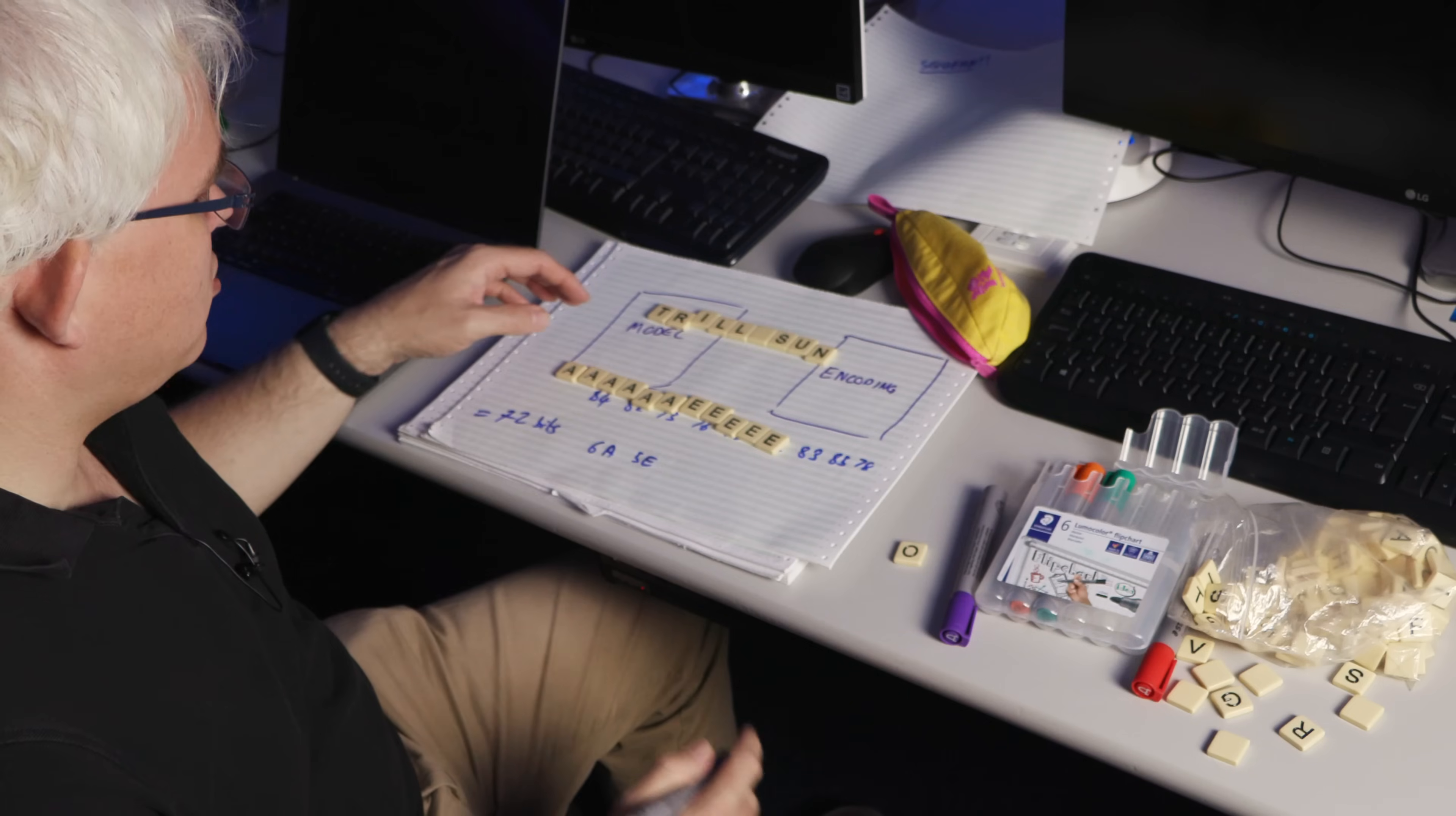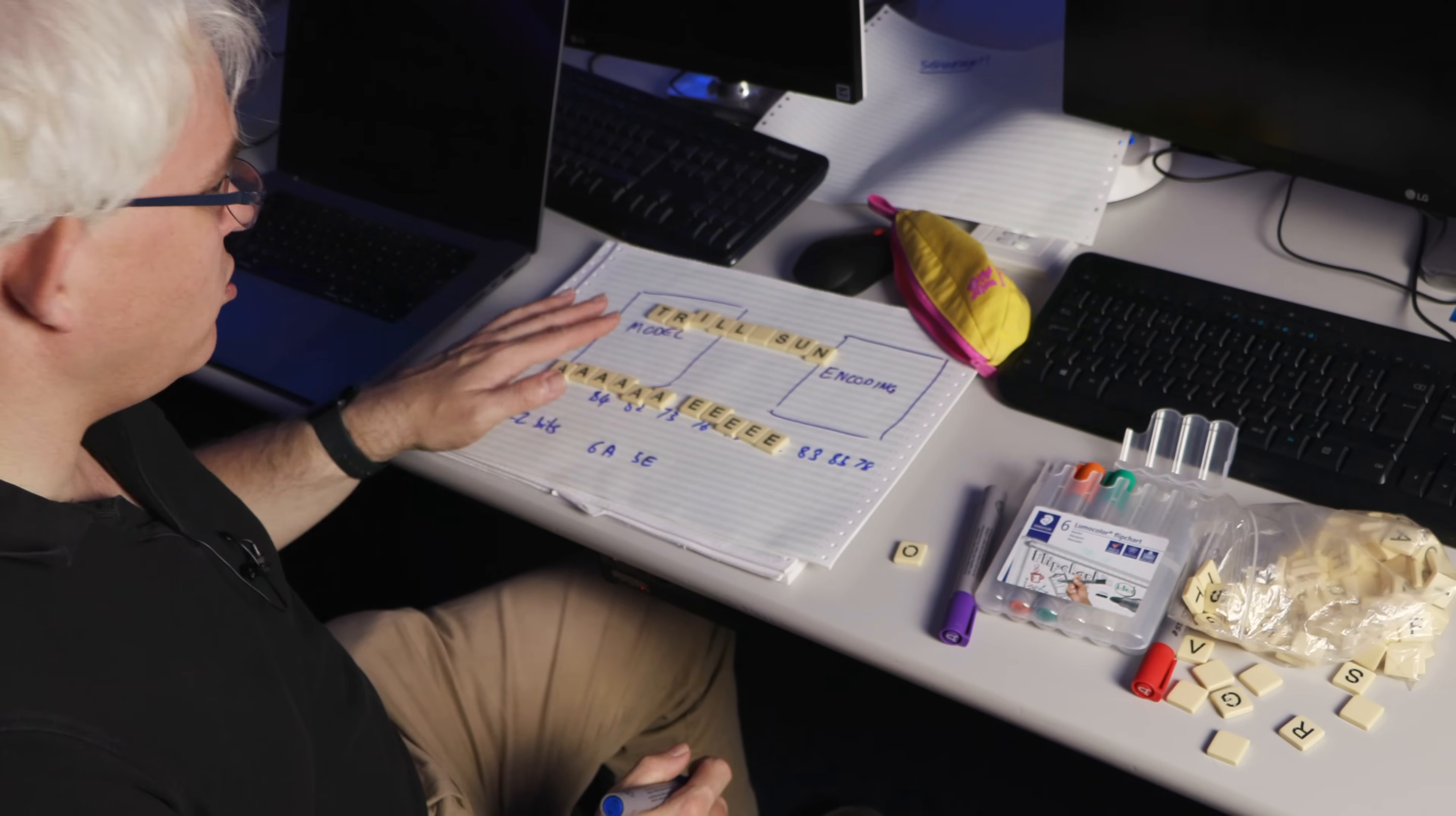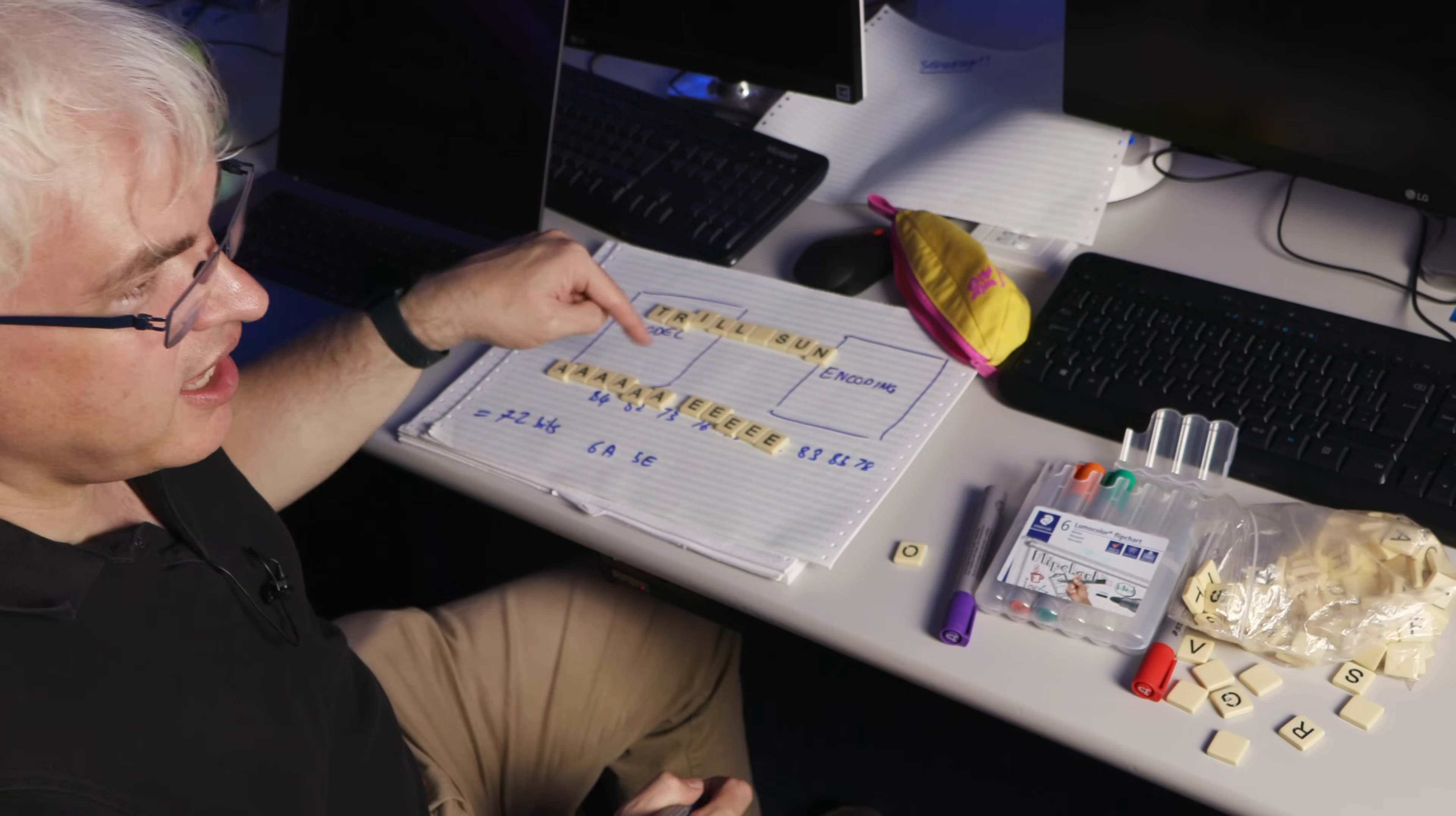In this case, we've got six A's followed by five E's. It takes up less space, and then we can encode that. Is this a model change? Is it an encoding change?